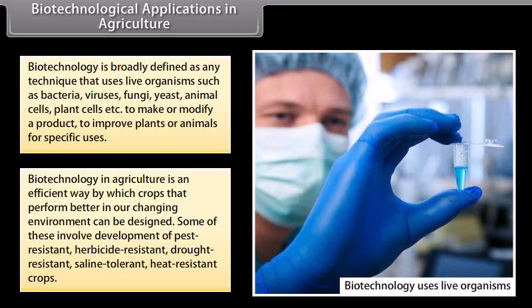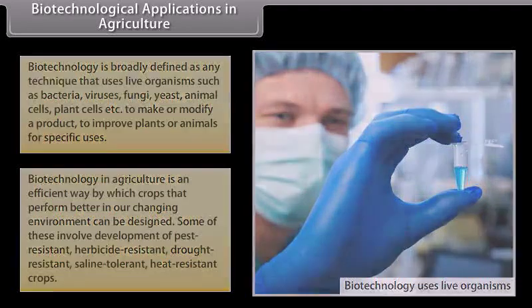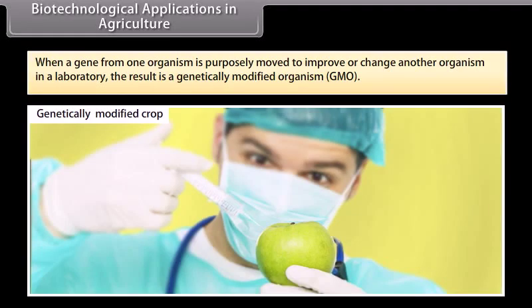Biotechnology in agriculture is an effective way by which crops that perform better in a changing environment can be designed. Some of these involve development of pest-resistant, herbicide-resistant, drought-resistant, saline-tolerant, and heat-resistant crops. When a gene from one organism is purposely moved to improve or change another organism in a laboratory, the result is a genetically modified organism, GMO.